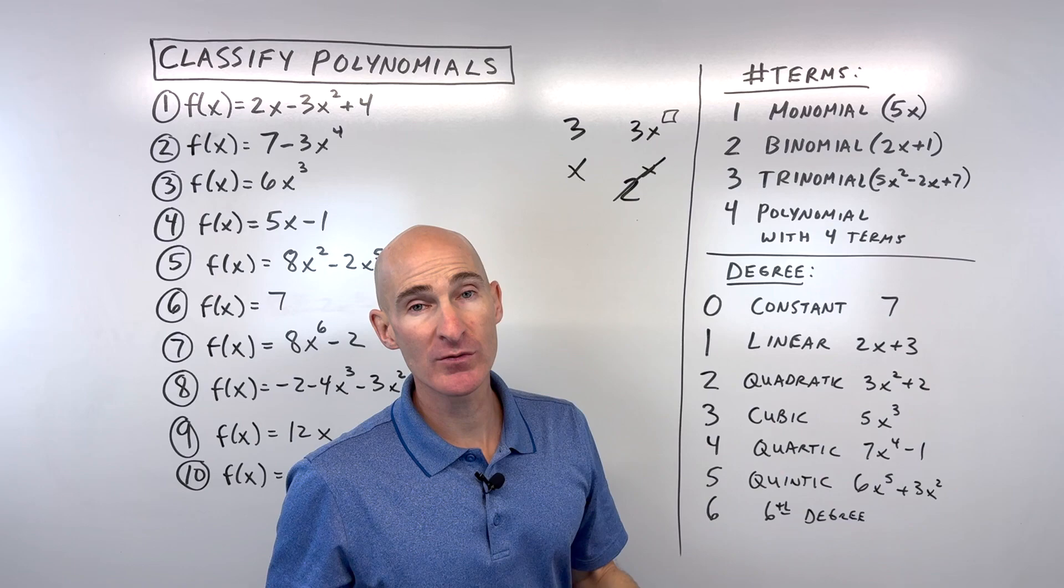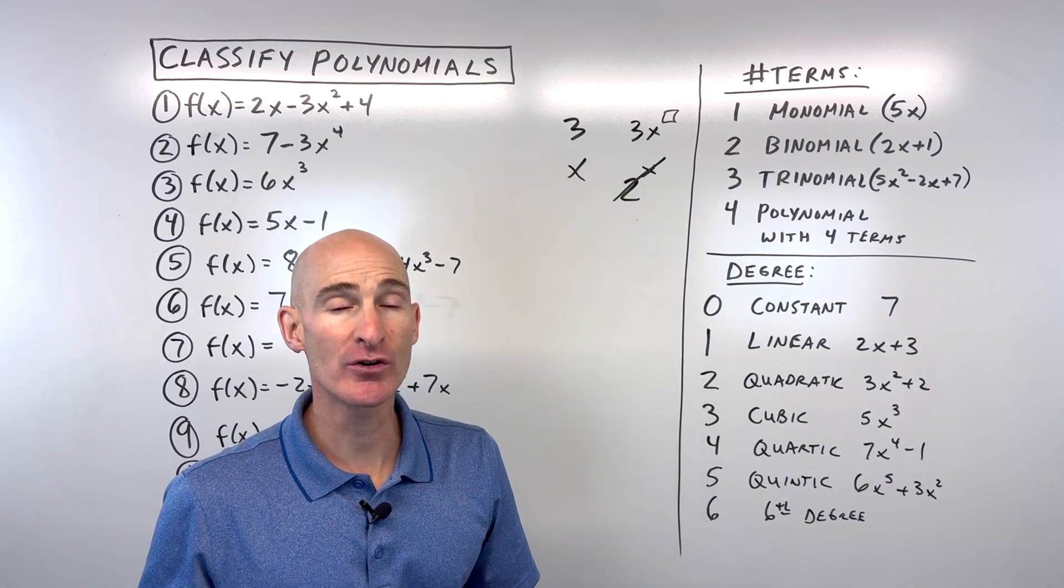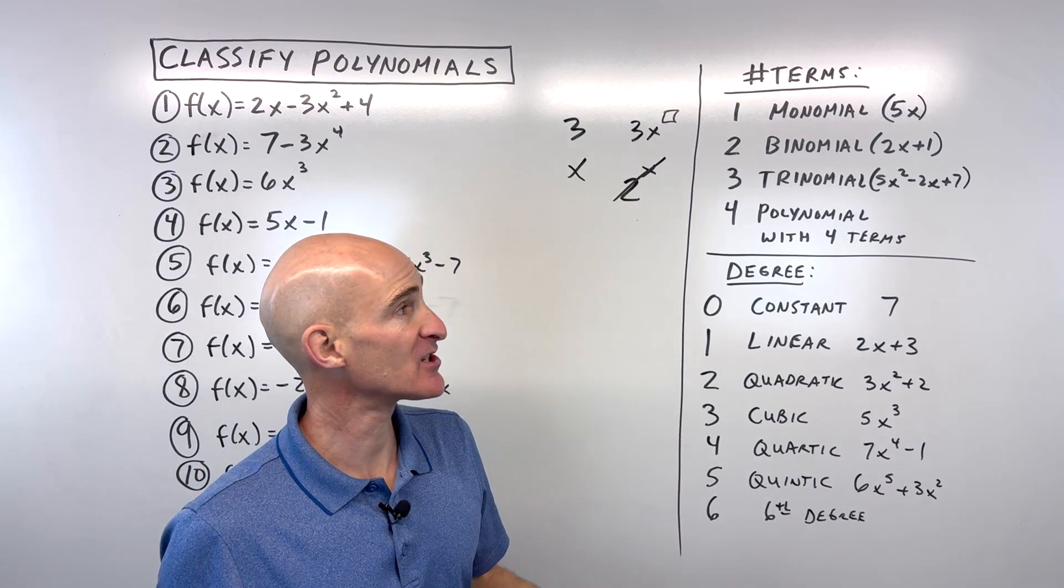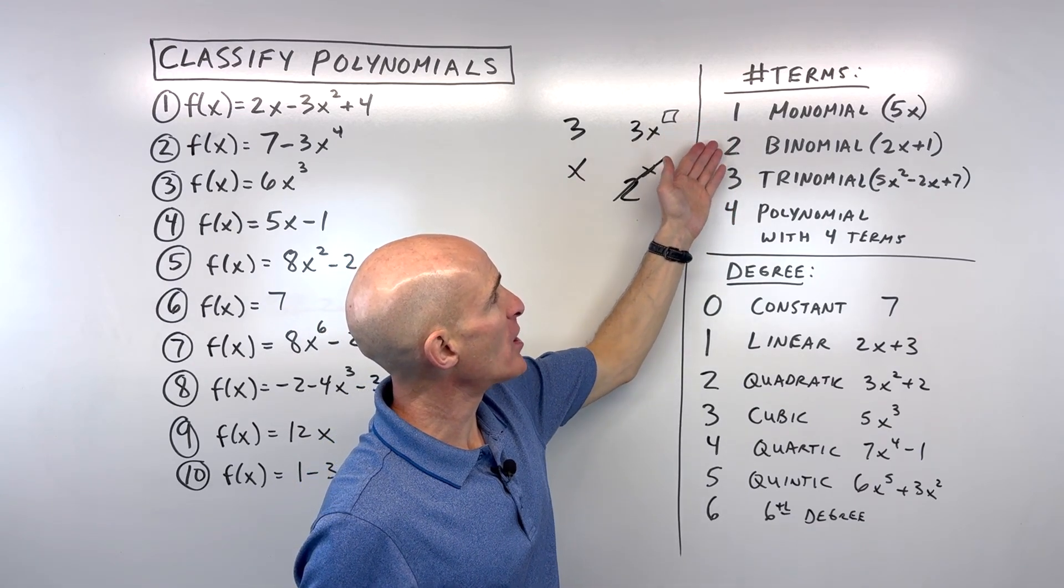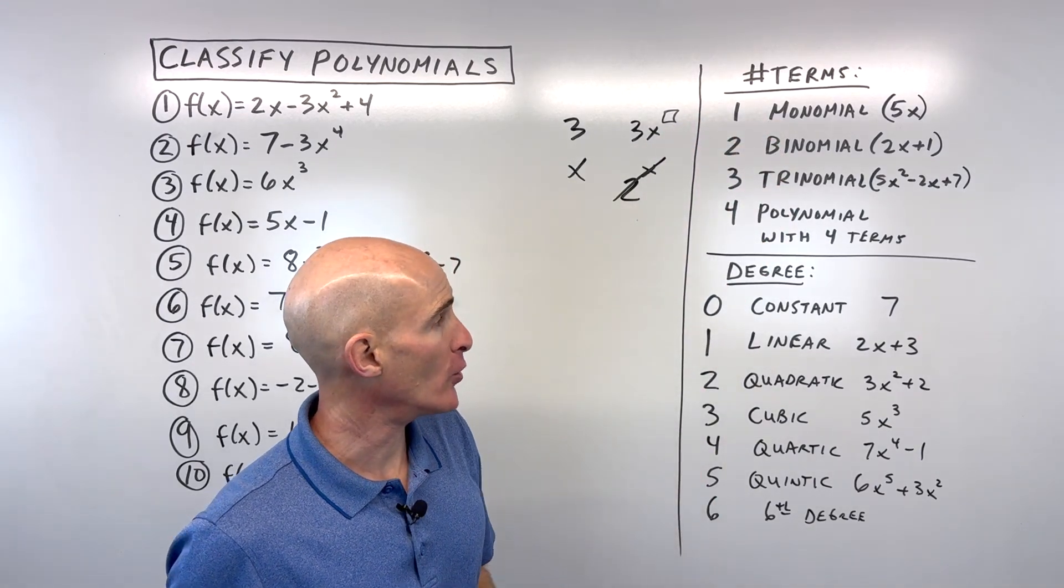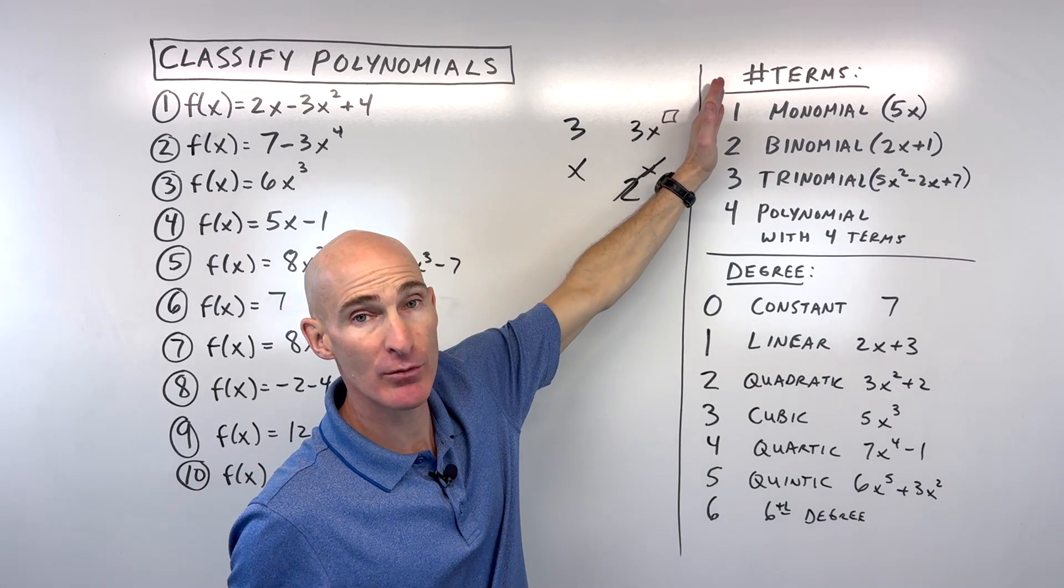And then a polynomial that has four terms, we can just call it a polynomial with four terms or five terms or six terms. But when it's just one, two, or three, we have a special name: monomial, binomial, trinomial. So that's classifying it by the number of terms.